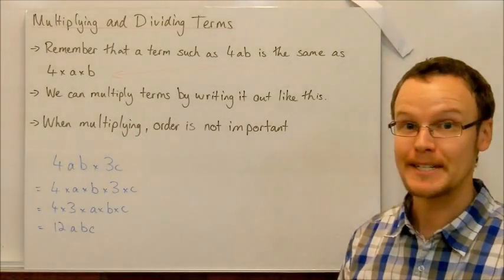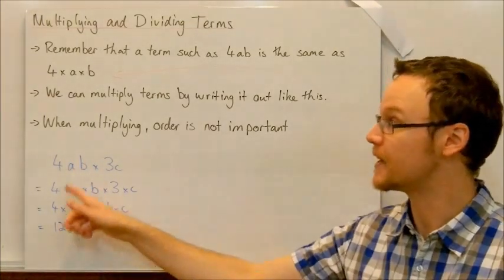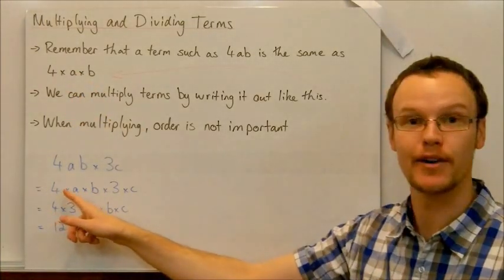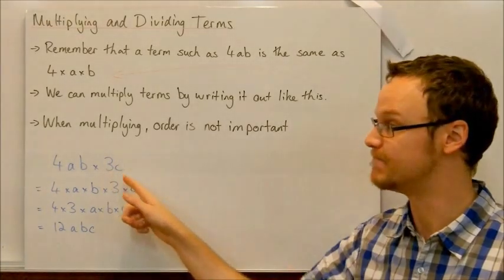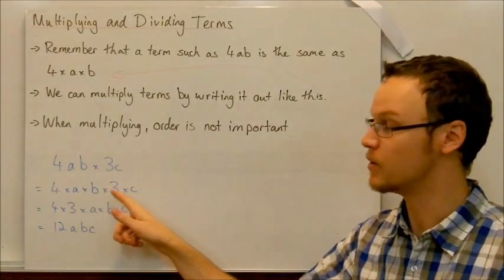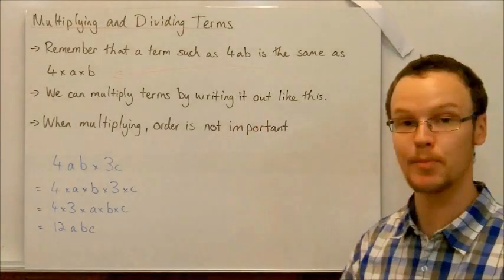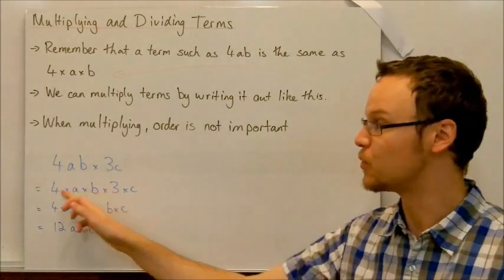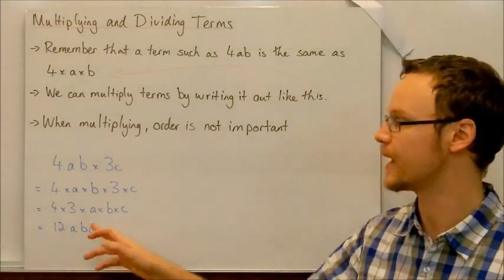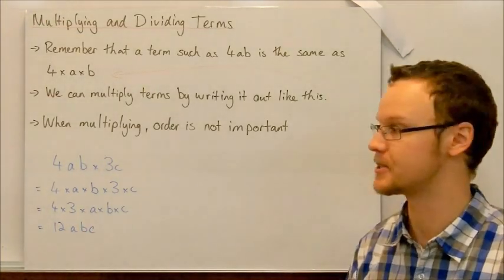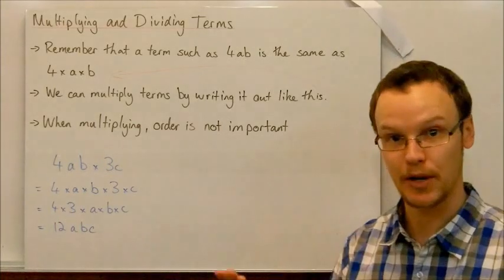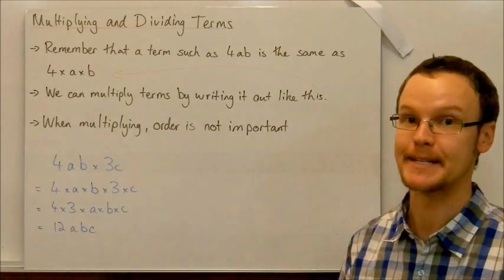Here, 4ab times 3c. We can expand that out to write 4 times a times b times 3 times c. We can move them around because order is not important. So we can put the 4 times 3 together, then have the variables coming after: times a times b times c. So 4 times 3 is 12, and we're left with 12abc.